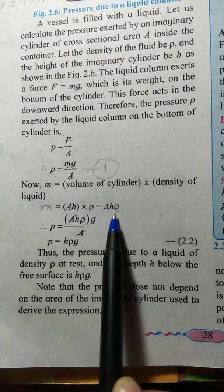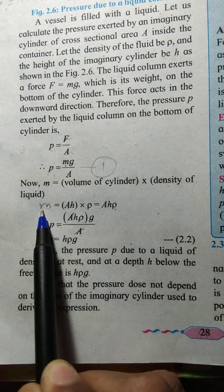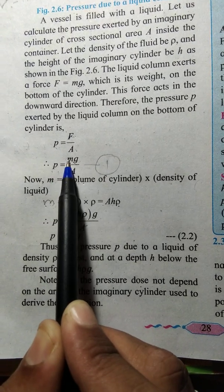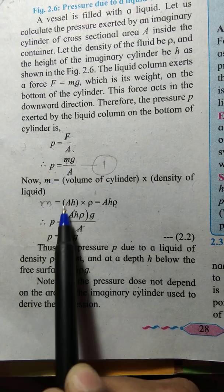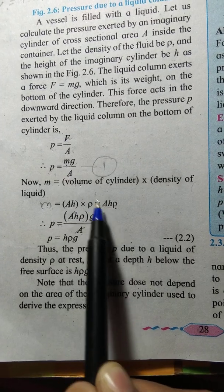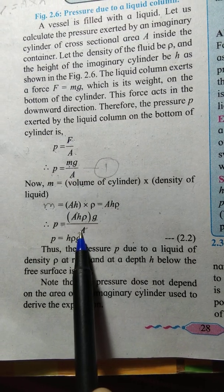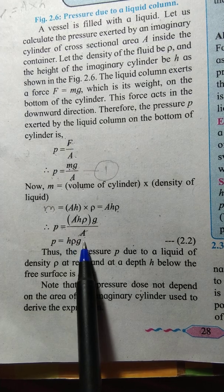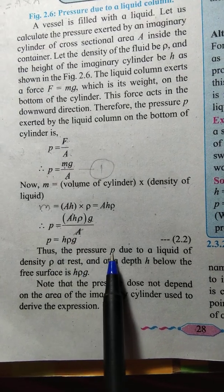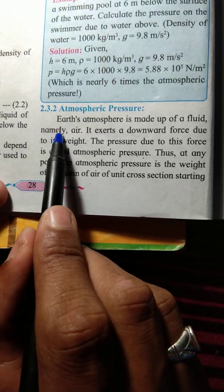Putting this in, mass is A, H, rho. So P equals Mg upon A, which is A, H, rho, G upon A. A cancels out, giving H, rho, G as the final answer for the pressure.